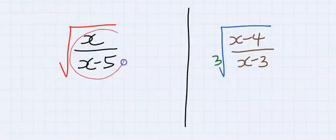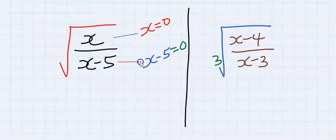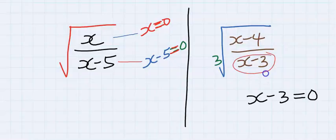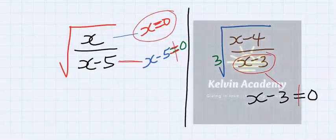With these rules in mind, for a rational expression inside a square root, you solve for the numerator and you also solve for the denominator, equating both to zero. However, for a rational expression inside a cube root, you equate only the denominator to zero. At the denominator, this will not be equal to zero, but for the numerator it can be equal to zero.